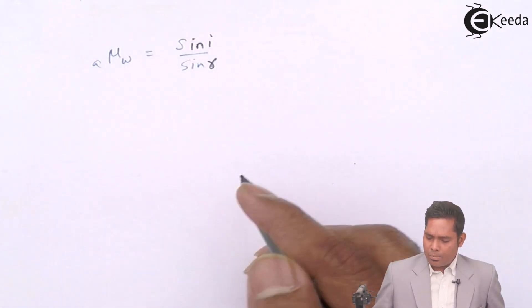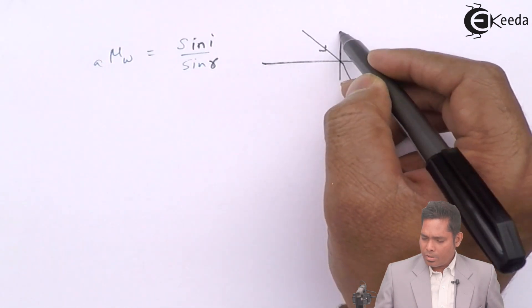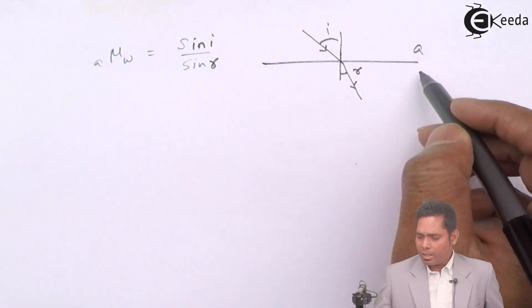If the ray follows the reversible path, so for this case, this is i and this is r. So this is the equation I am going to use if this is air and water. It follows the same path.